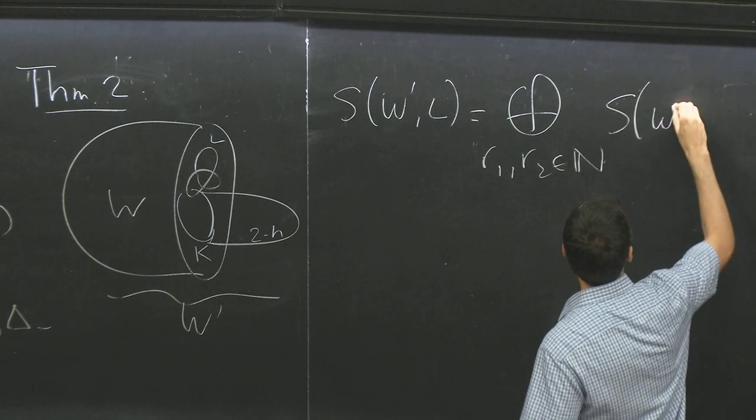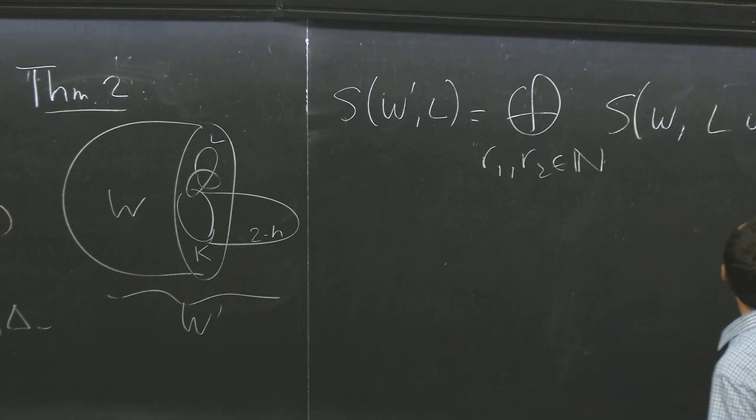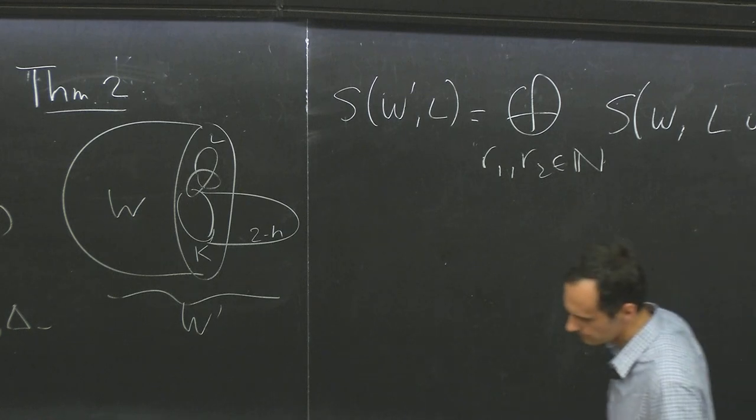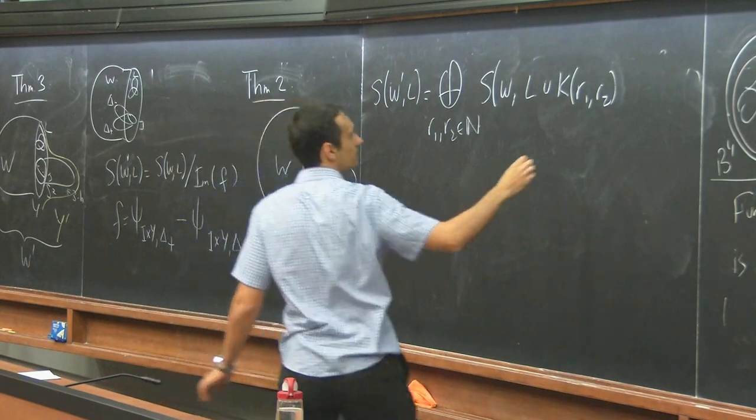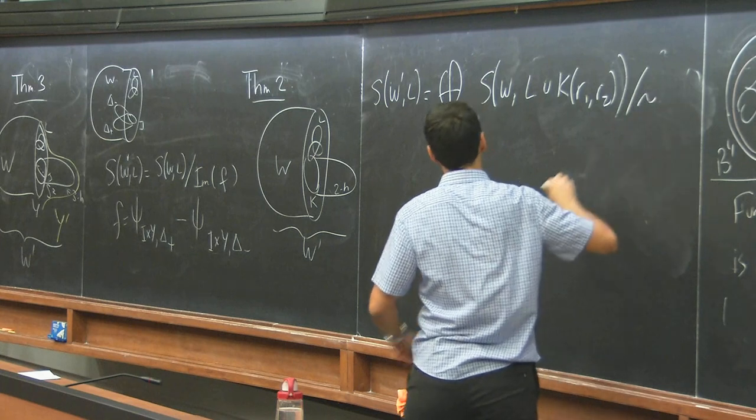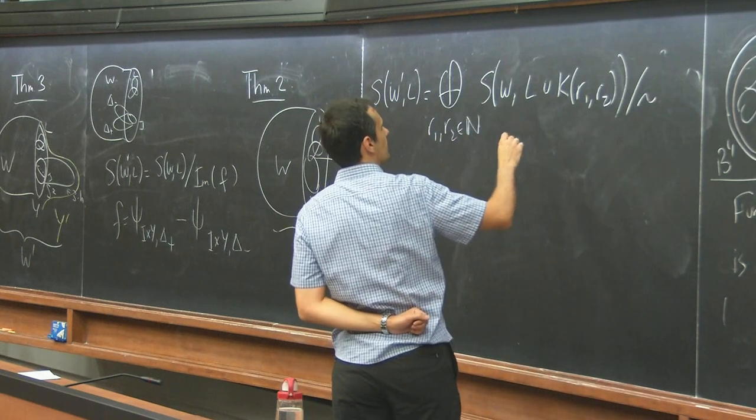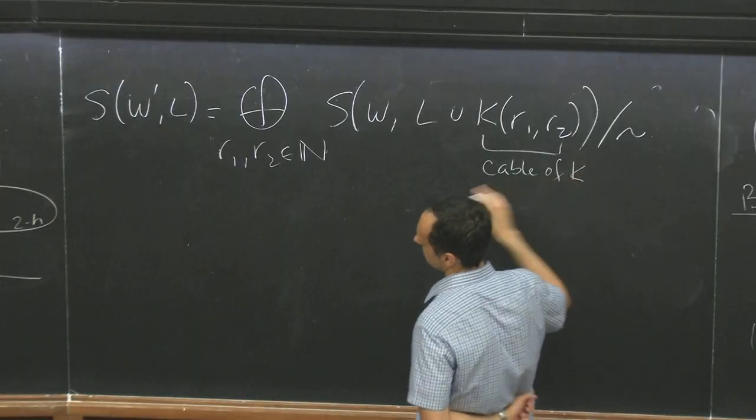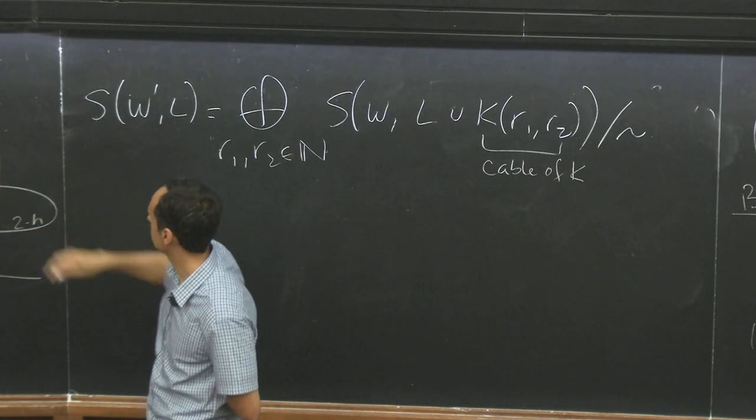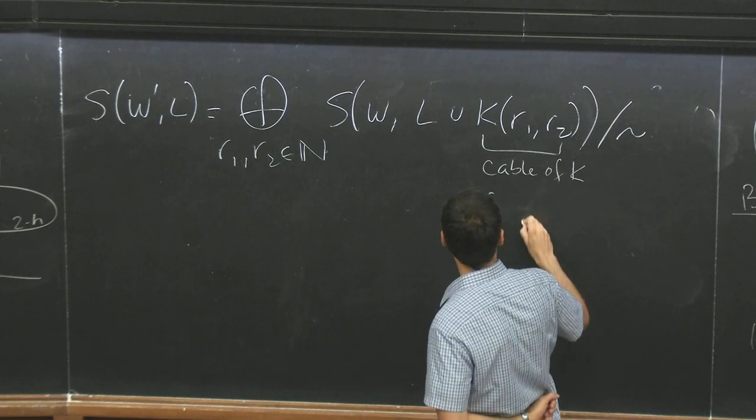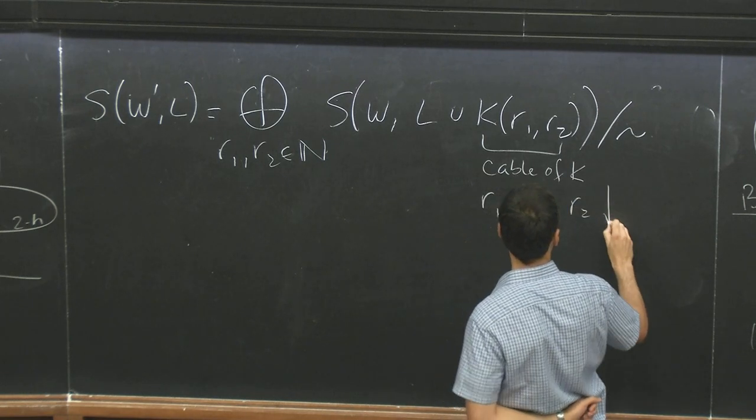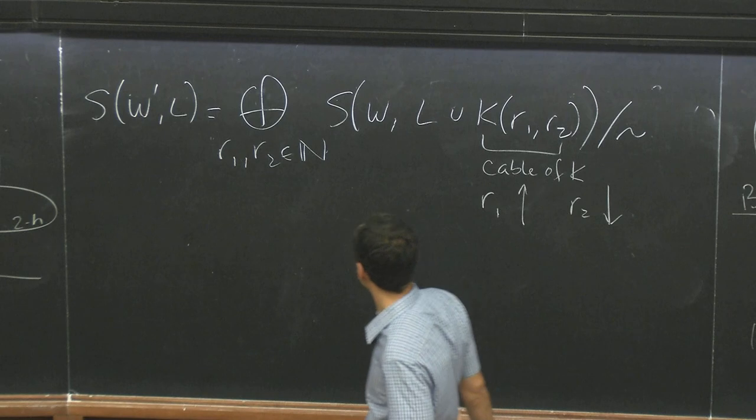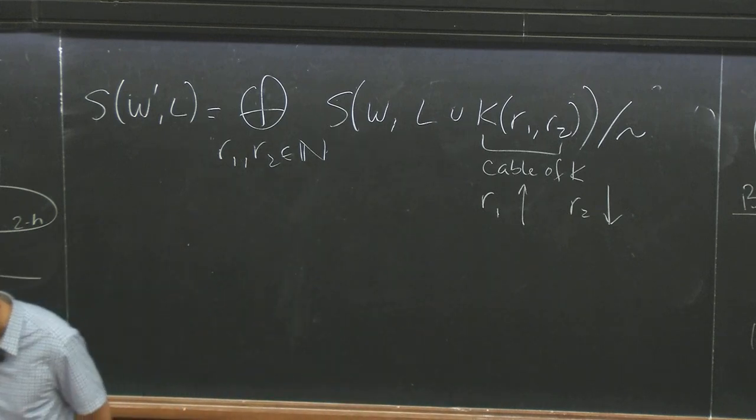So now the theorem is SW prime L is the direct sum over all R1 and R2 natural numbers. S of W, L union K, R1, R2. Modulo an equivalence relation. Yes, where, what is, this is a cable of K. So K is the attaching link for these two handles. It can be linked with L where you have R1 things in one direction and R2 things in the other direction.